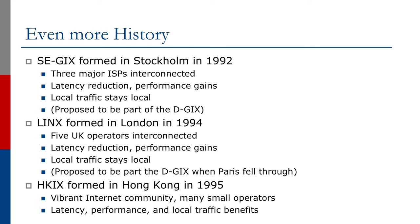The Swedish exchange point was formed in Stockholm in late 1992. Three major ISPs interconnected, and the main aim was latency reduction, performance gains, and of course to keep local traffic local. LINX was formed in London in 1994. The five UK network operators at the time interconnected, again for latency reduction, performance gains, and so that local traffic stays local.